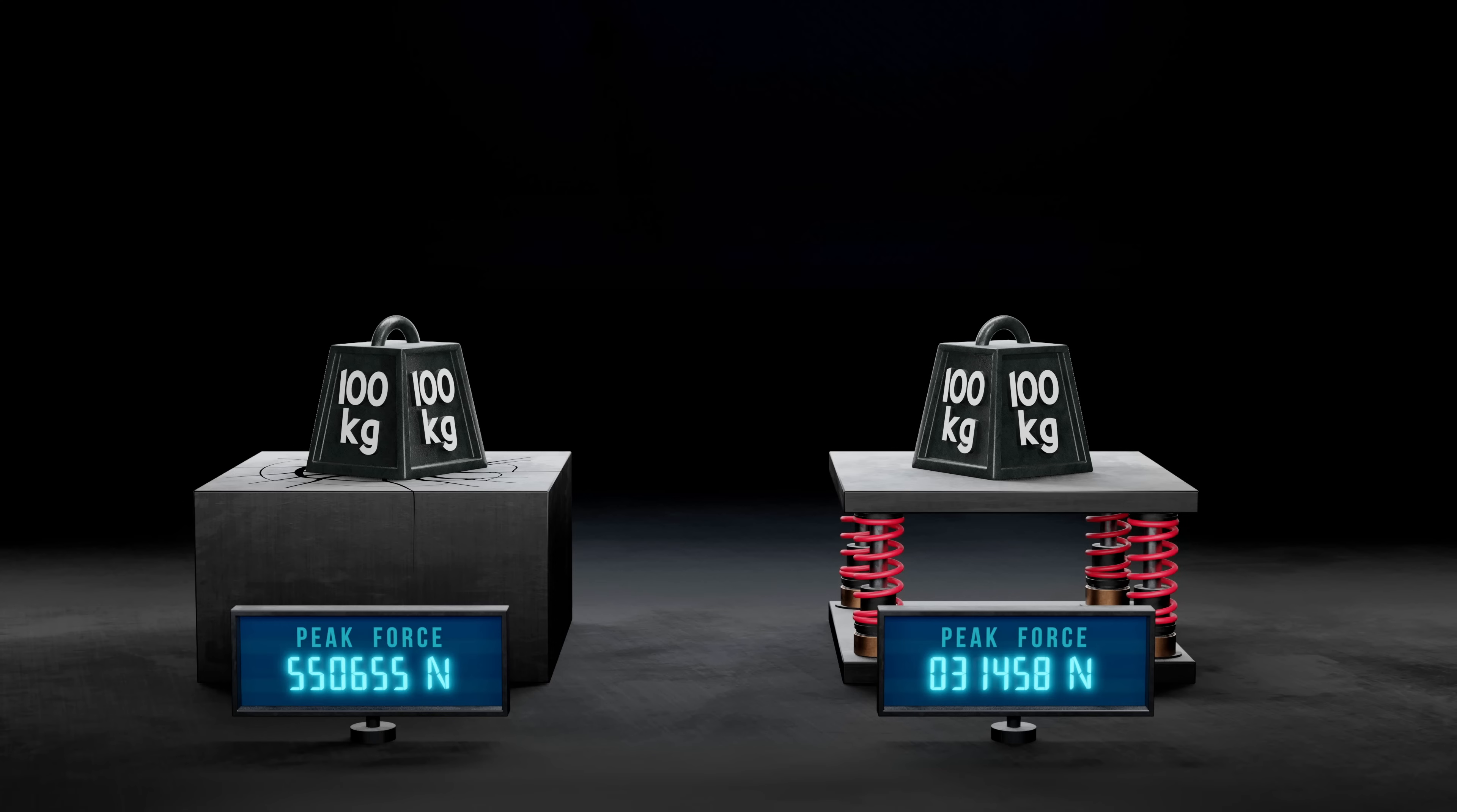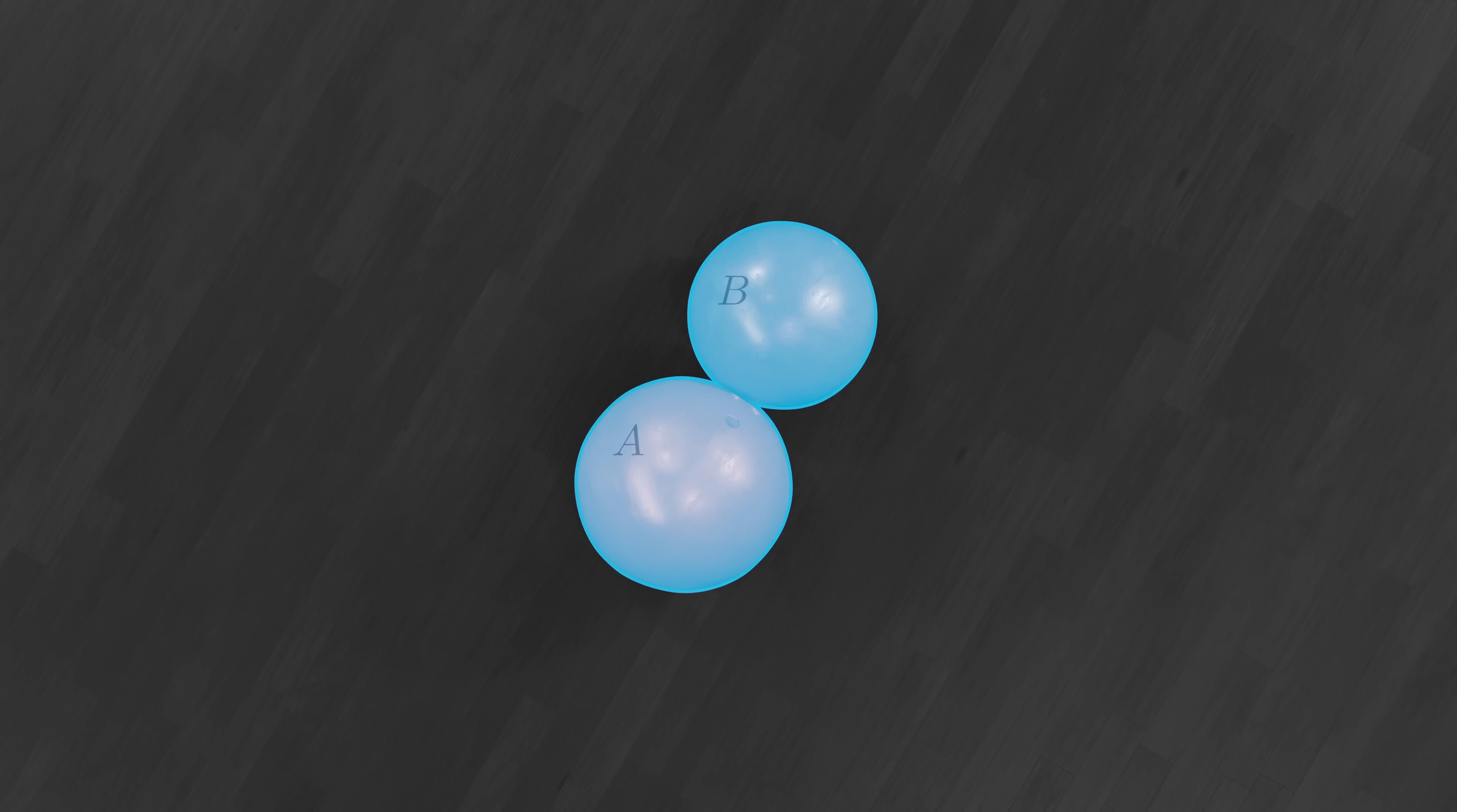Impulse also helps explain why momentum is conserved in an isolated system. Whenever objects in an isolated system interact, they exert internal forces on each other that are equal in magnitude but opposite in direction. This is just Newton's third law. These internal forces and the time over which they act are impulses, which cause a change in momentum. Since the forces are applied for the same amount of time, the momentum change of one object is exactly balanced by the momentum change of the other, resulting in no net change in the system's total momentum. And that explains why momentum is conserved in the absence of net external forces.